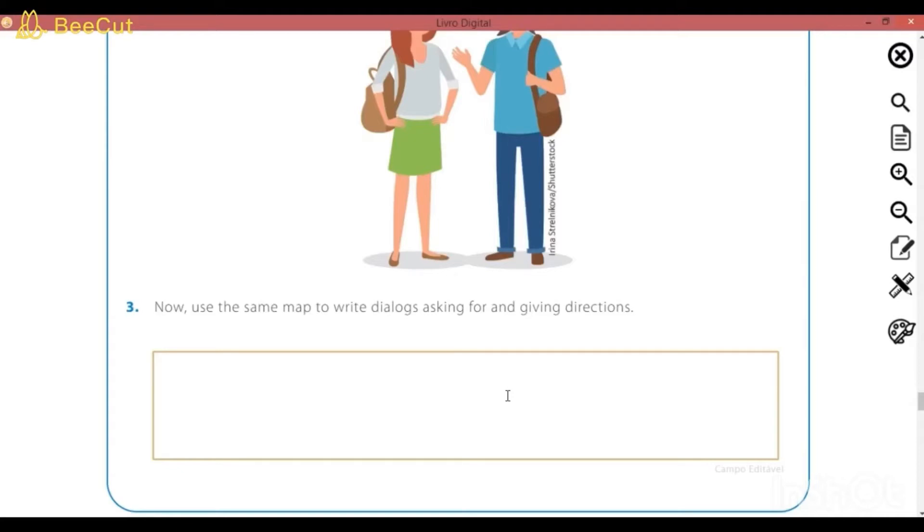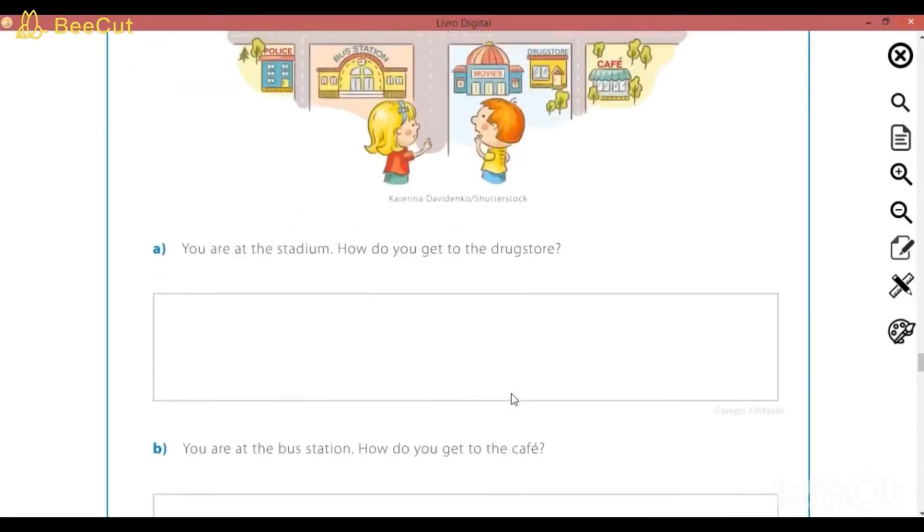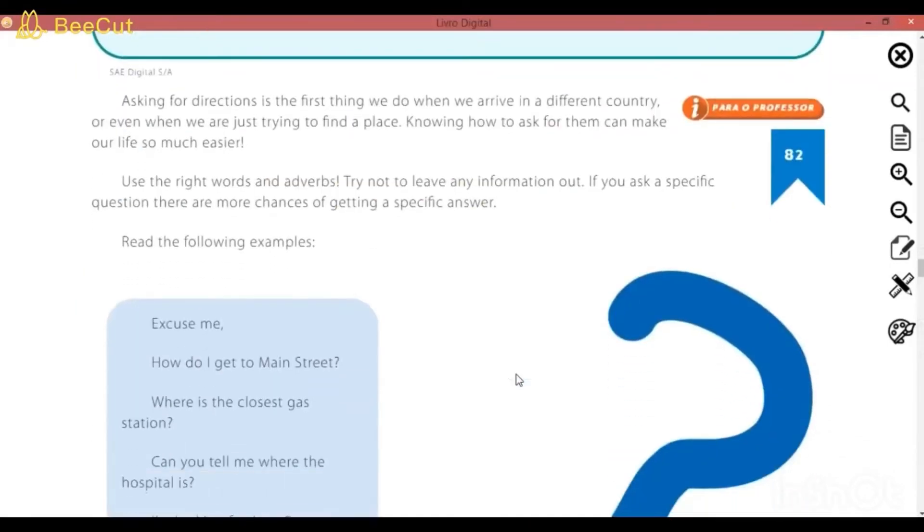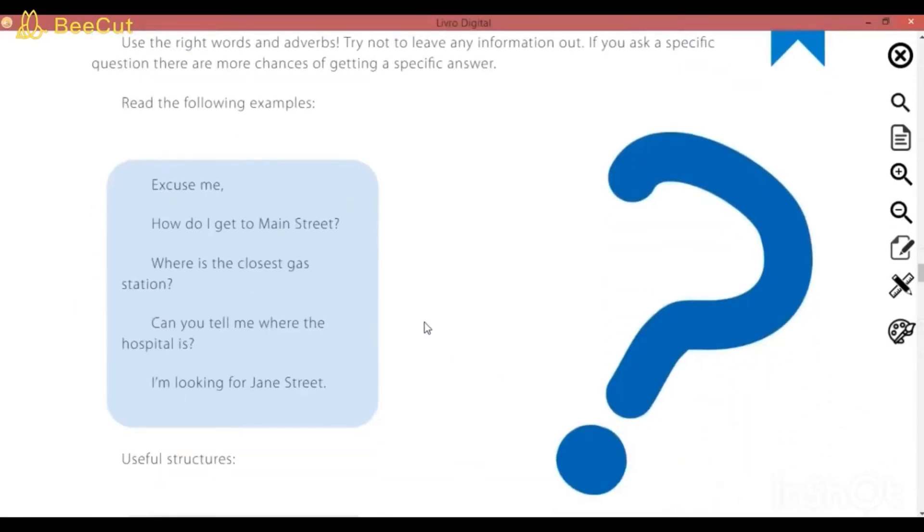Lembrando que sempre, quando a gente vai pedir uma informação, a gente vai usar o quê? Excuse me. Com licença. Então, a gente sempre inicia o diálogo dessa forma. É tanto que na musiquinha inicial que eu coloquei, a menina começa com Excuse me. E tem várias formas de perguntar. Onde é que fica um lugar? Como é que você pode chegar lá? Como é que eu posso relembrar, Tite? A gente vai relembrar na página 82, que tem as expressões.